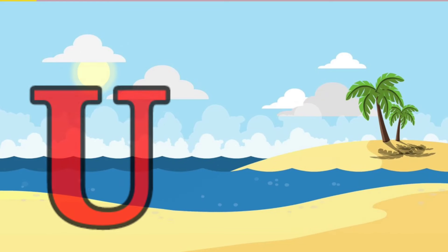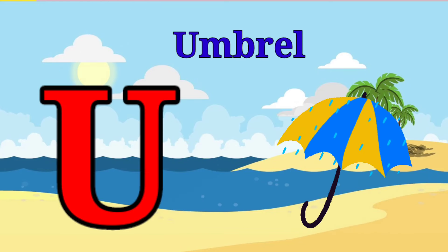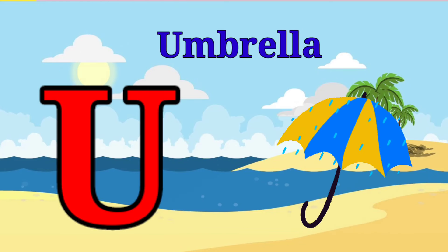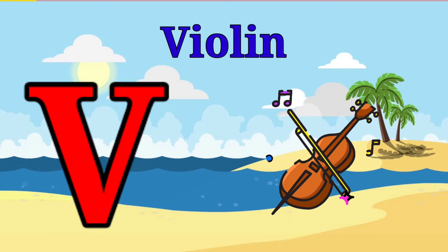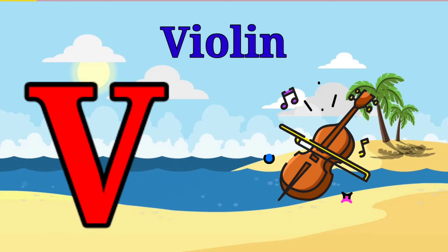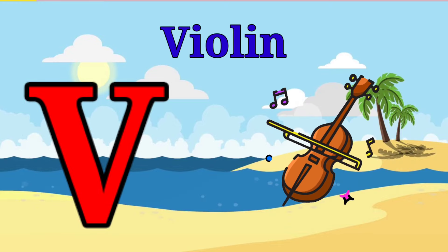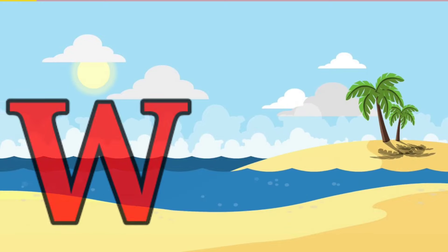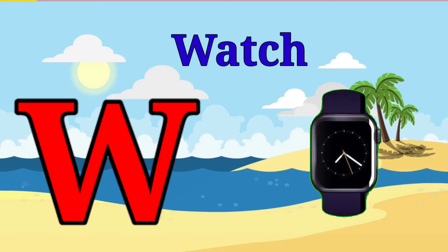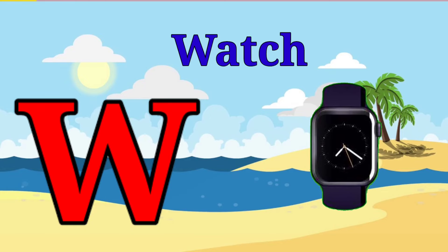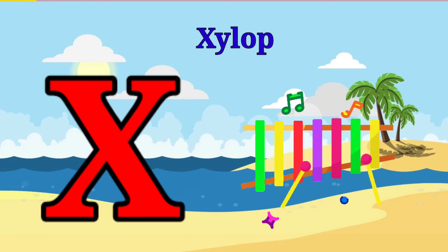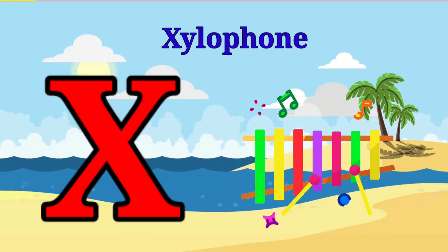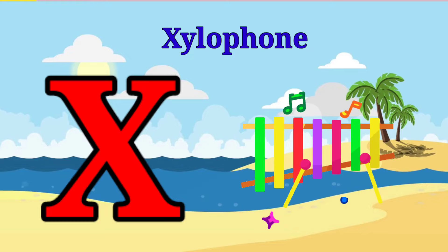U is for umbrella, u-u-umbrella. V is for violin, v-v-violin. W is for watch, w-w-watch. X is for xylophone, x-x-xylophone.